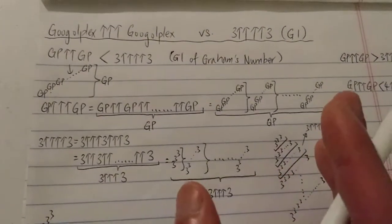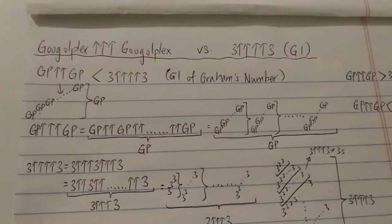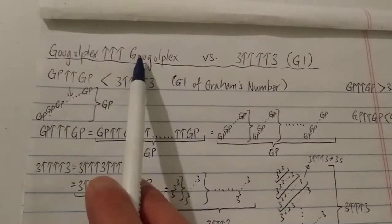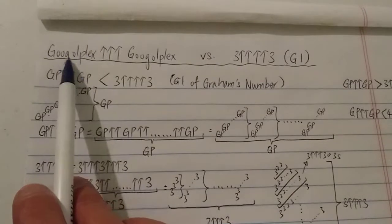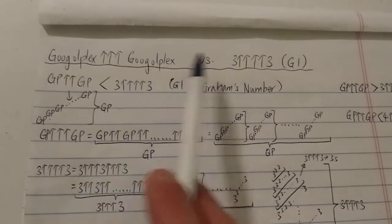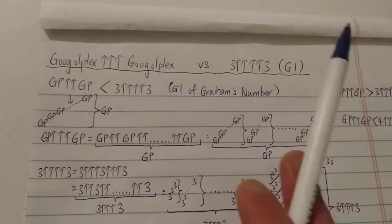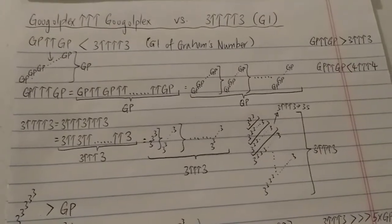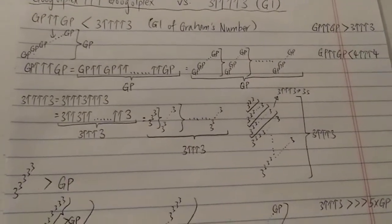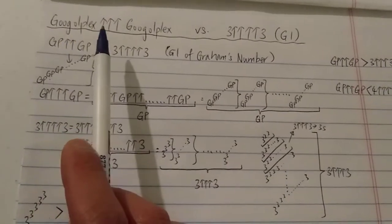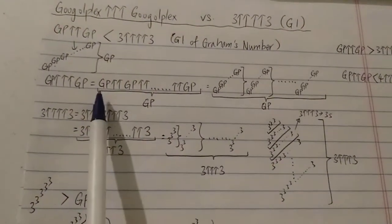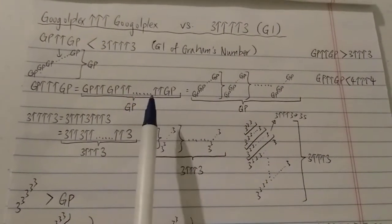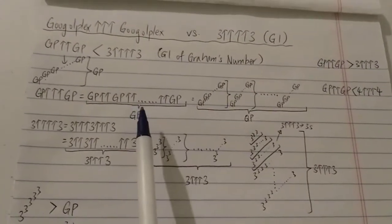Since that's clear, I want to one-up this by putting one more arrow between the Googleplexes. So now it is Googleplex triple arrow Googleplex versus G1. Which one is bigger? You can think about it for a bit and then continue the video. Googleplex triple arrow Googleplex is equal to Googleplex double-arrow Googleplex, double-arrow Googleplex, and so on, for a Googleplex number of times.